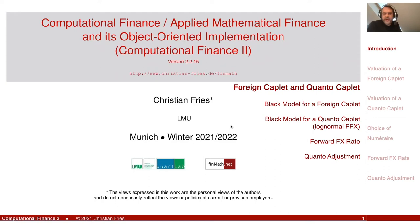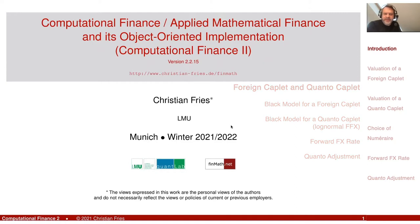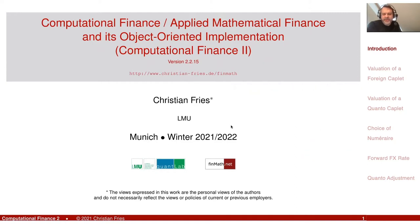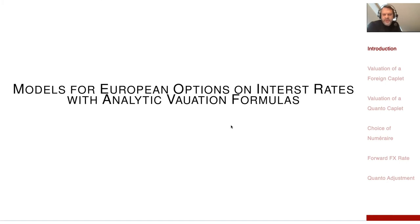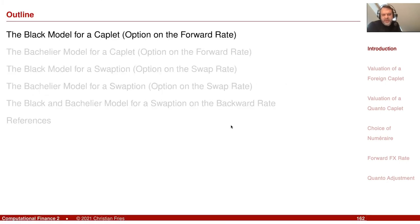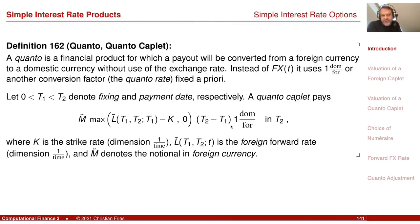Welcome to Applied Mathematical Finance, Computational Finance and its object-oriented implementation. We are in a session on interest rates and interest rate products, and we already started discussing the valuation of interest rate options. The classic simple options — the Caplet, the Swaption — using the Black model and the Bachelier model, but we also introduced already the Quanto Caplet, a product that has a more unnatural payoff.